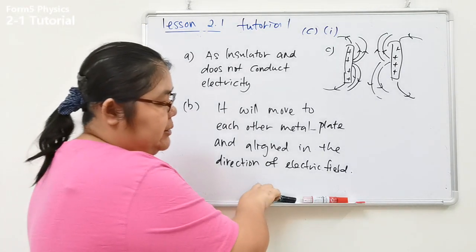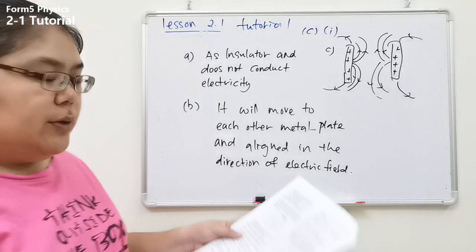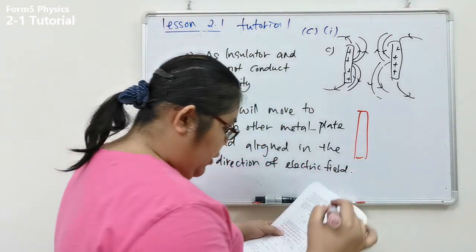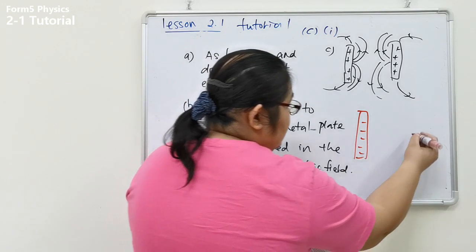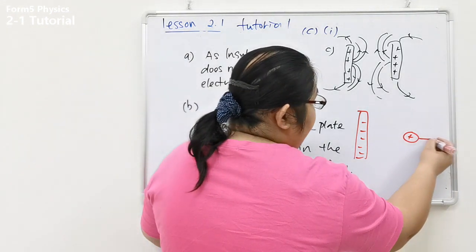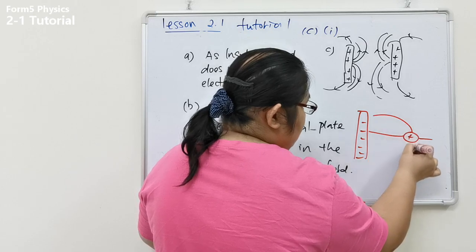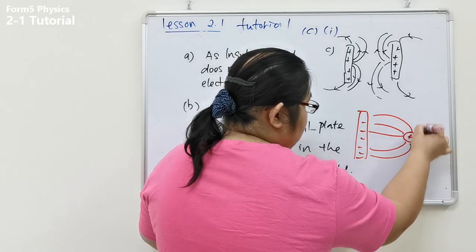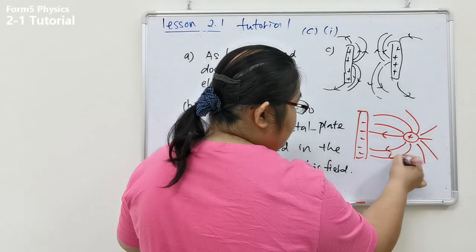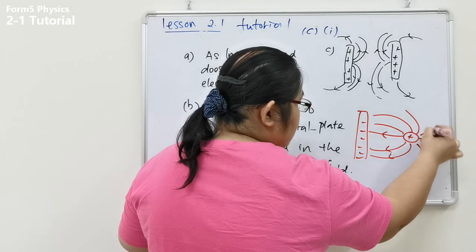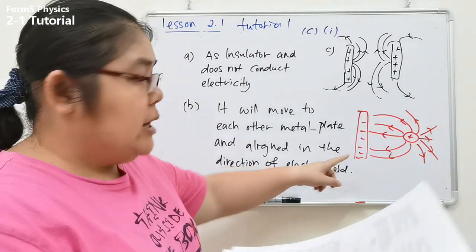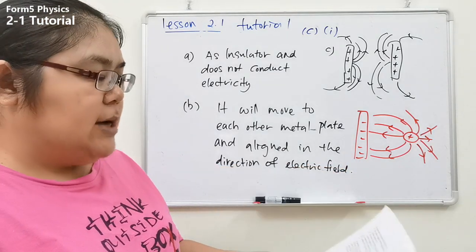For the second diagram, one plate is negative and the electrode is positive, so they attract. The electric field lines go from the positive electrode toward the negative plate. All the field lines connect between the two opposite charges, showing attraction. That completes the answers for Tutorial 2.1.